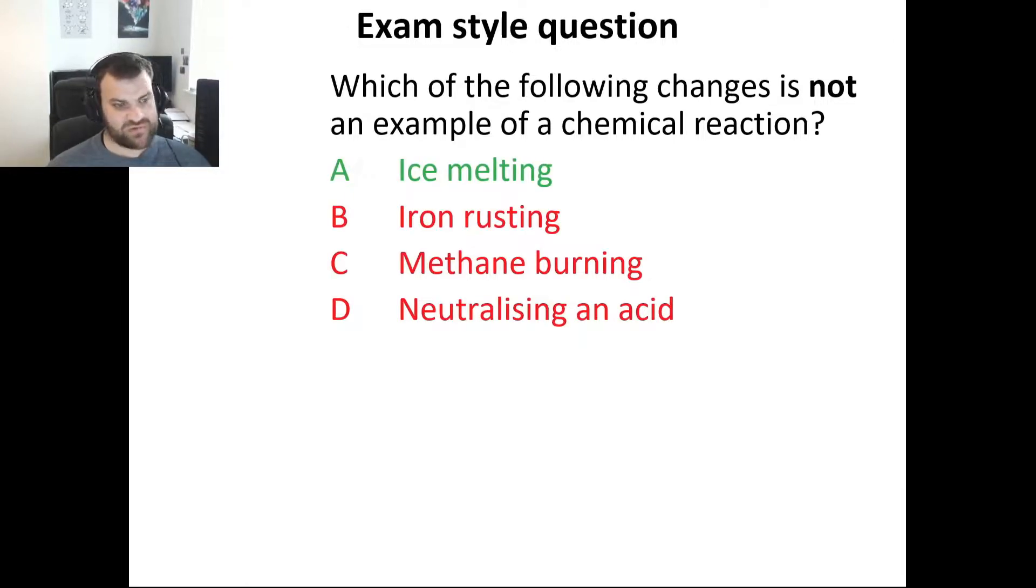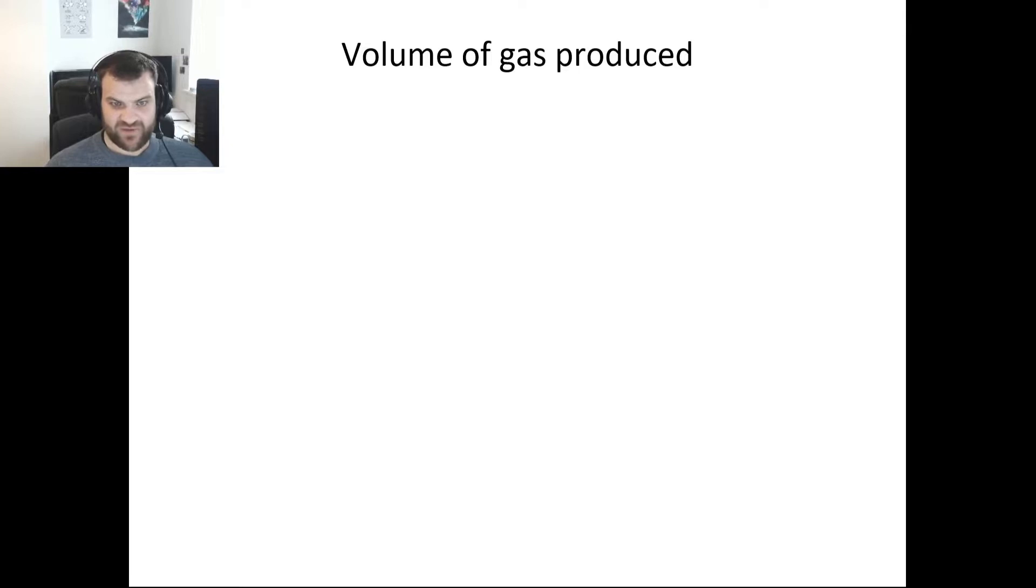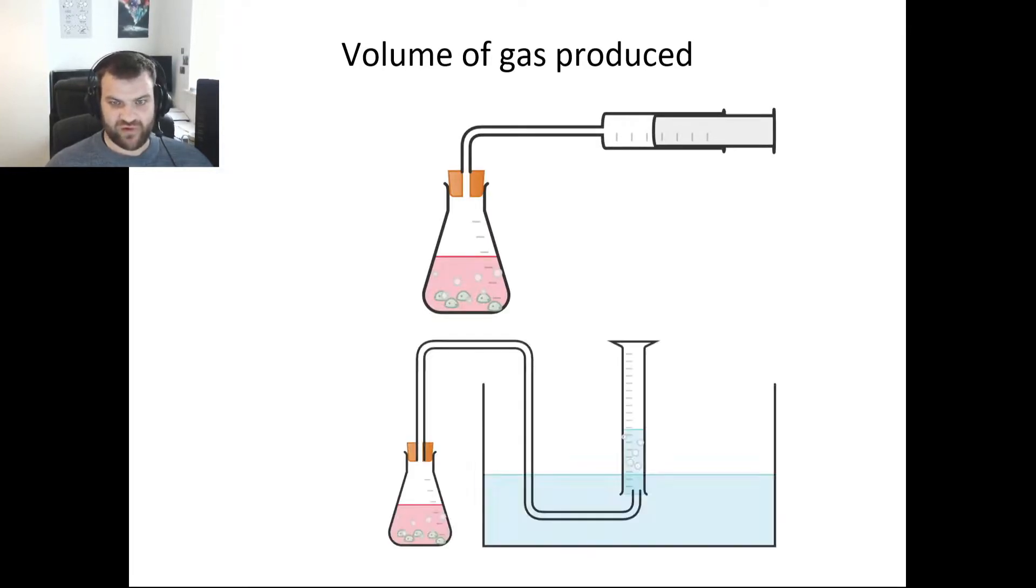Other things that you could be asked about is how we would actually follow a chemical reaction. There's two main ways that you'd be asked about. One of which would be to follow the volume of gas that's being produced. We can use a gas syringe to do this, or we can have an upside down measuring cylinder in a trough of water. The measuring cylinder is filled with water, the gas bubbles through, and now we can measure how much has been produced over a certain length of time.